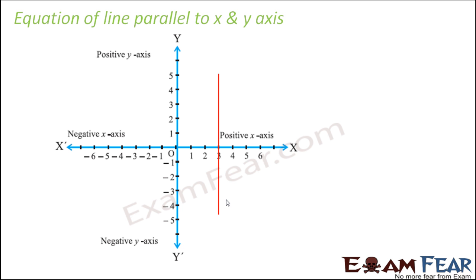Let's draw a line that is parallel to the y axis. If you see the points here, this point has x equal to 3, y equal to 0. This point has x equal to 3, y equal to 1. This point has x equal to 3, y equal to 3.